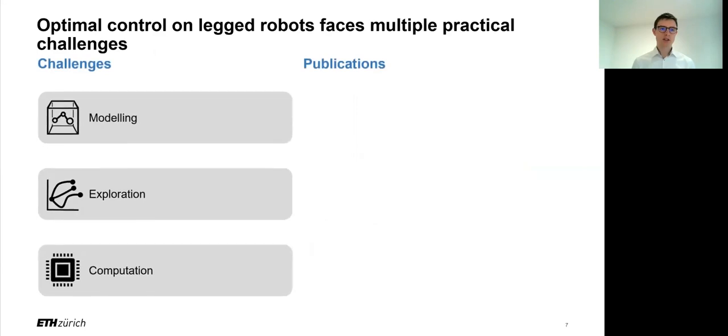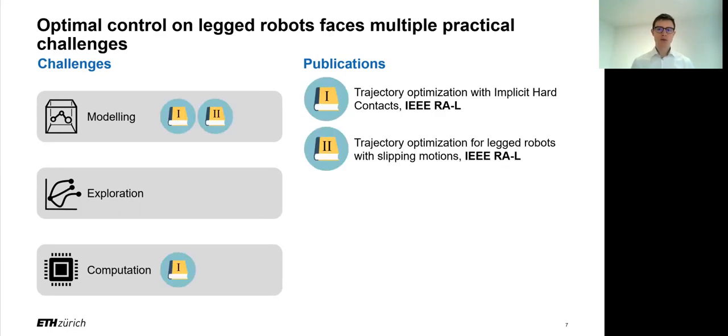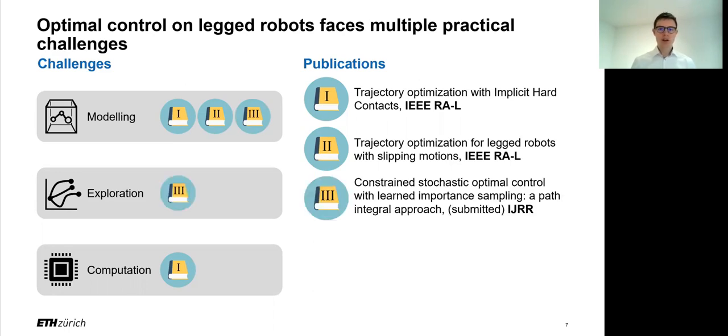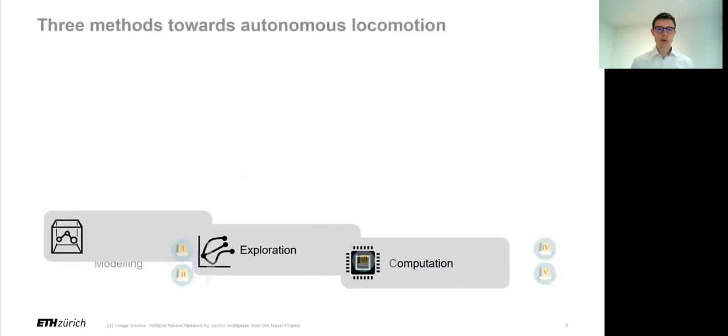So in my thesis now, I will address those problems separately with a number of publications. In the first two works, I'm looking at a way how to model legged robots that is both accurate and non-restrictive, but still competitively fast. Then in the third work, I'll address the problem of exploration to avoid getting stuck in local minima, and as a by-product, get a more general modeling procedure. And finally, in the last two works, I will try to eliminate the computational bottleneck of optimal control by using machine learning tools. Now, my following talk will be structured along solving those three problems.